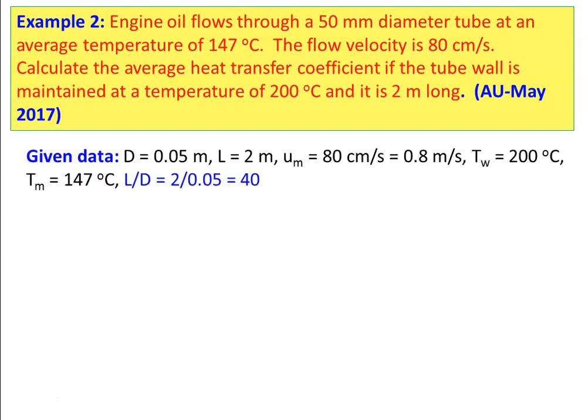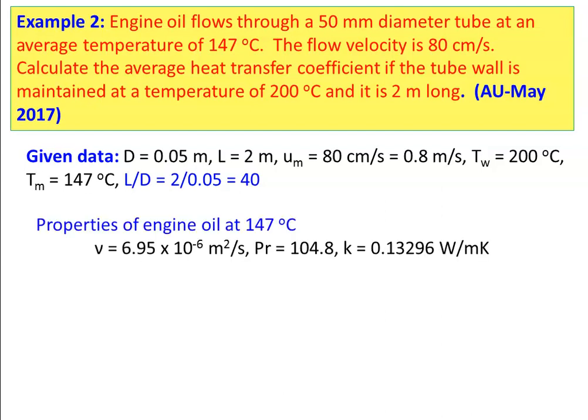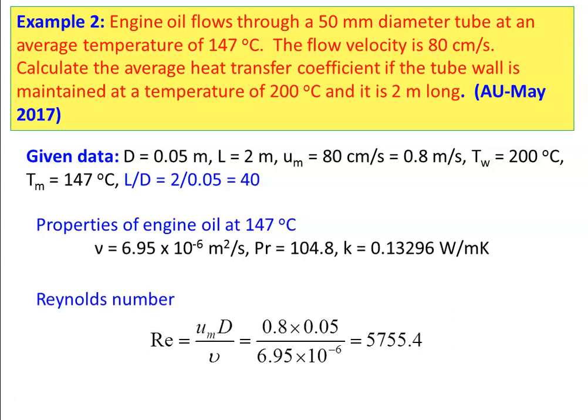Given: diameter = 0.05 m, length = 2 m, mean velocity = 0.8 m/s, wall temperature = 200°C, mean fluid temperature = 147°C, L/D ratio = 40. Properties of engine oil at 147°C: ν = 6.95 × 10⁻⁶ m²/s, Prandtl number = 104.8, thermal conductivity k = 0.13296 W/m·K. Reynolds number = 0.8 × 0.05 / (6.95 × 10⁻⁶) = 5755.4 — turbulent flow.